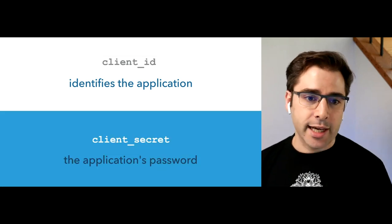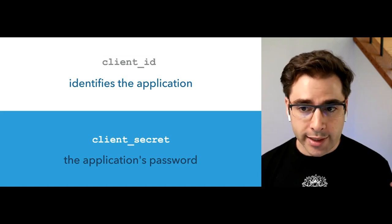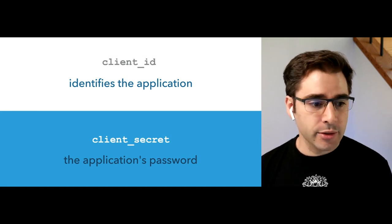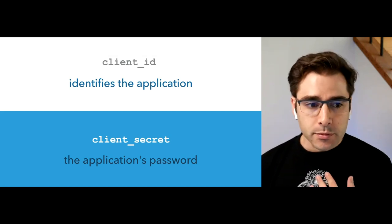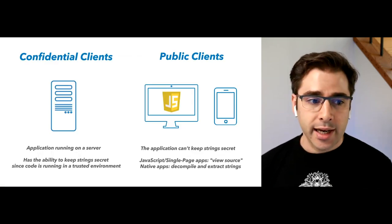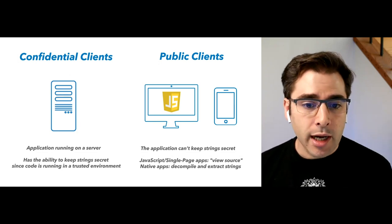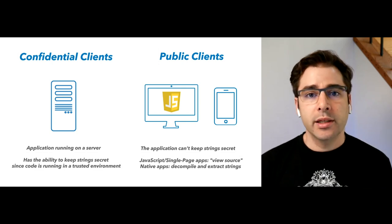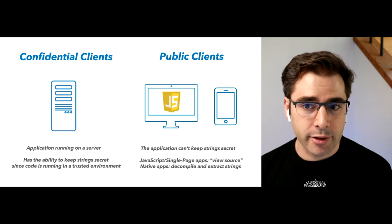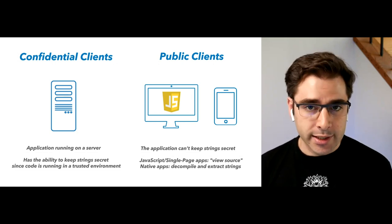I get a client secret because I chose the option of a web server app. The app now has its own identity in the system. The client ID identifies the app; the client secret is effectively the app's password. It's really important to treat it the same way you would treat a password — don't check it into your source code; the app needs to protect it. In OAuth terms, a confidential client is one that can hold onto a client secret and keep it secure.